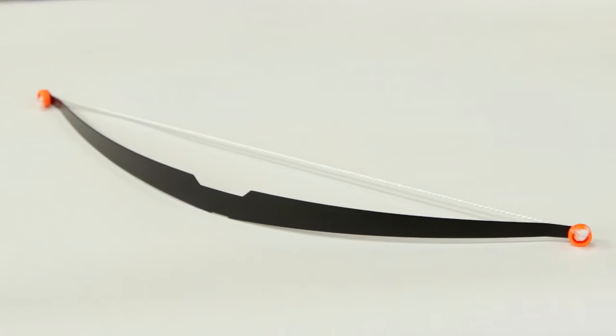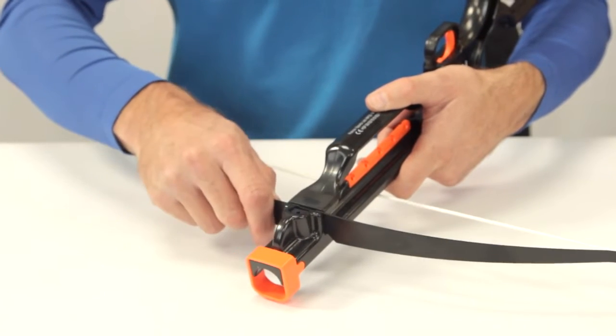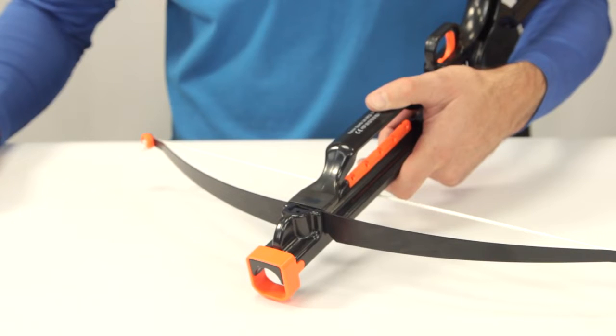The first thing you're going to do is take the prod, which is this piece, and place it into the bow body. Make sure the string is on top of the bow, then insert the prod with the larger cut inserted into the bow body. It should now look like this.